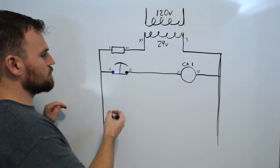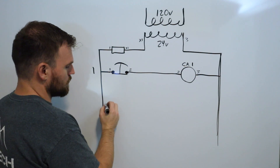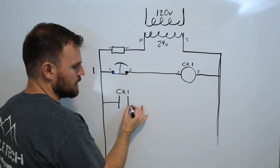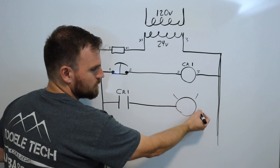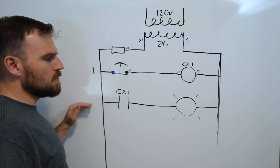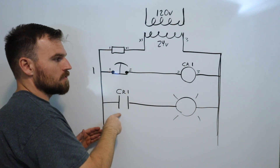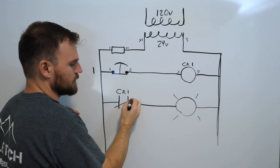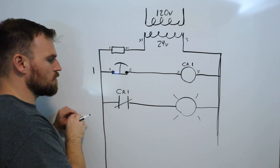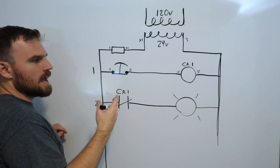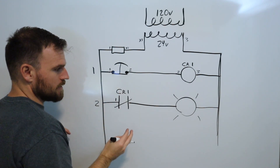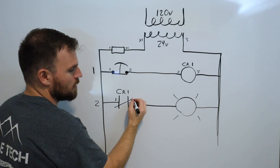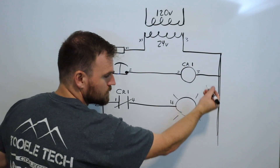Rung one is always labeled rung one. Rung two can include a contact from CR1 - make sure it's labeled CR1 - which turns on a light. So rung one controls rung two through the relay. In rung one, wire one enters, becomes wire two through the switch, goes through CR1 coil, and returns as wire three. In rung two, wire one comes in, passes through the CR1 contact as wire four, goes to the light, and returns as wire three.